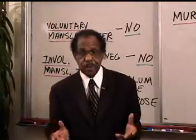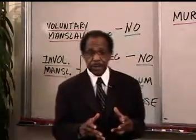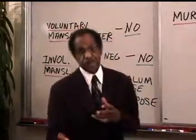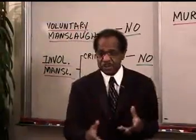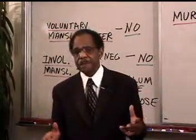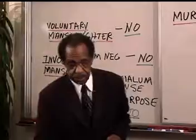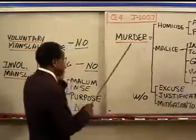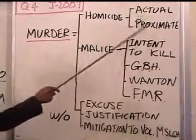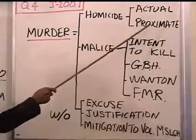You need to make an argument to the bar examiners that Dan may not be liable for the death of the pedestrian because it was so unforeseeable that anyone would get killed by lighting a piece of paper on the steps of the Capitol in the middle of the day. So the answer on proximate cause is probably not liable, but the discussion is where the points are. Did Dan have malice? Intent to kill — no. Intent to inflict great bodily harm — no.